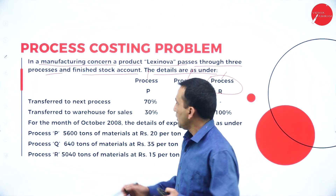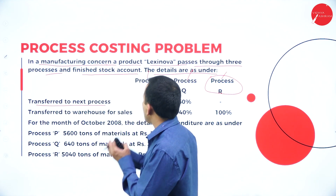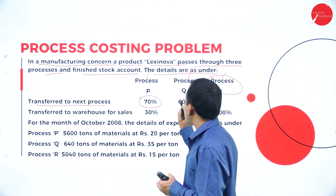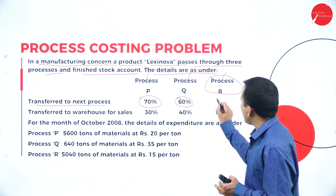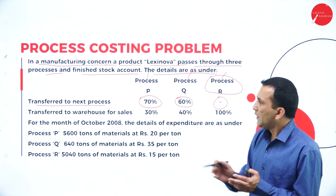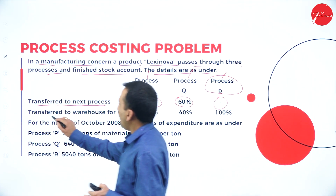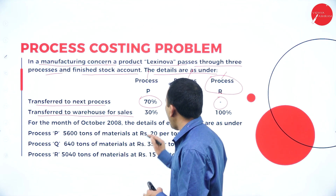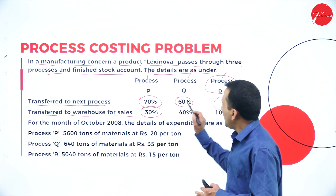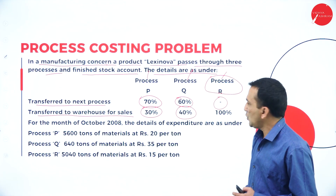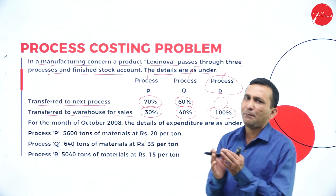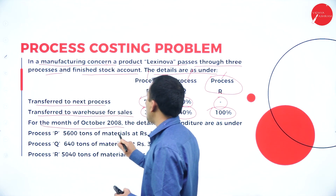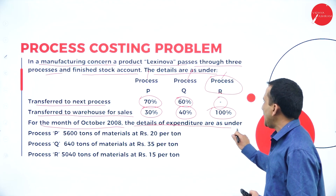From Process P, 70 percent is transferred to the next process, and from Process Q, 60 percent is transferred. In Process R, we cannot find a further transfer because the three processes will be completing, so output moves to the warehouse for sales — finished stock. Under Process P, 30 percent goes to finished goods; under Process Q, 40 percent; and in the last process, 100 percent, since all three processes complete.